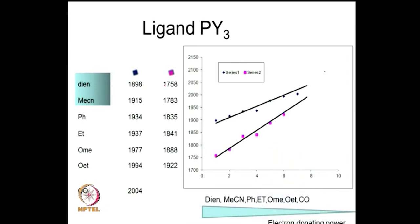Going back to the CO frequency data: if you have OEt groups which are strongly electron withdrawing, the frequency of the trans CO is in fact higher. Relative to MoCO6, the complex with P(OEt)3 has the trans CO stretching frequency closest to MoCO6 because P(OEt)3 is a very good pi-accepting ligand — the OEt groups pull electron density away, making the sigma-star orbital more effective. When the group was phenyl it was not as good a pi acceptor, but with OEt it is a very good pi acceptor.